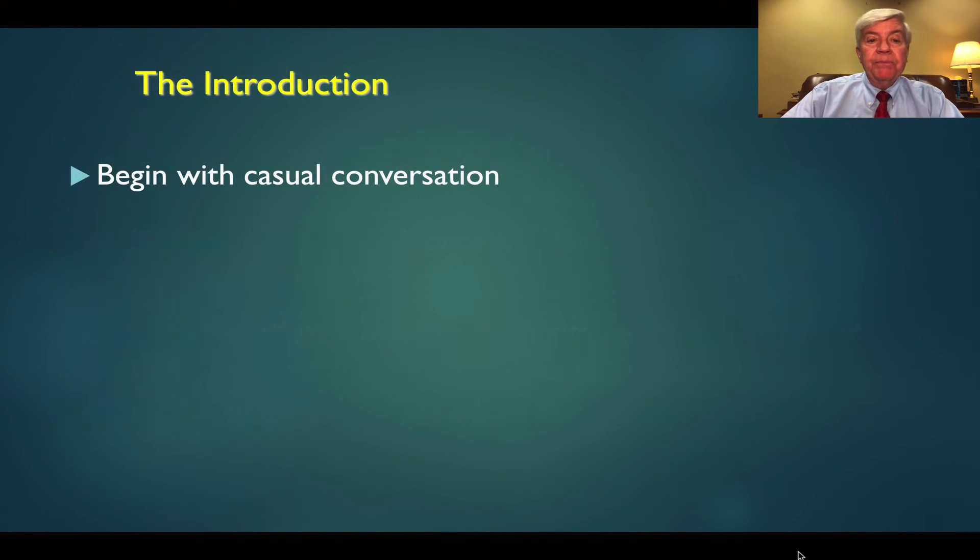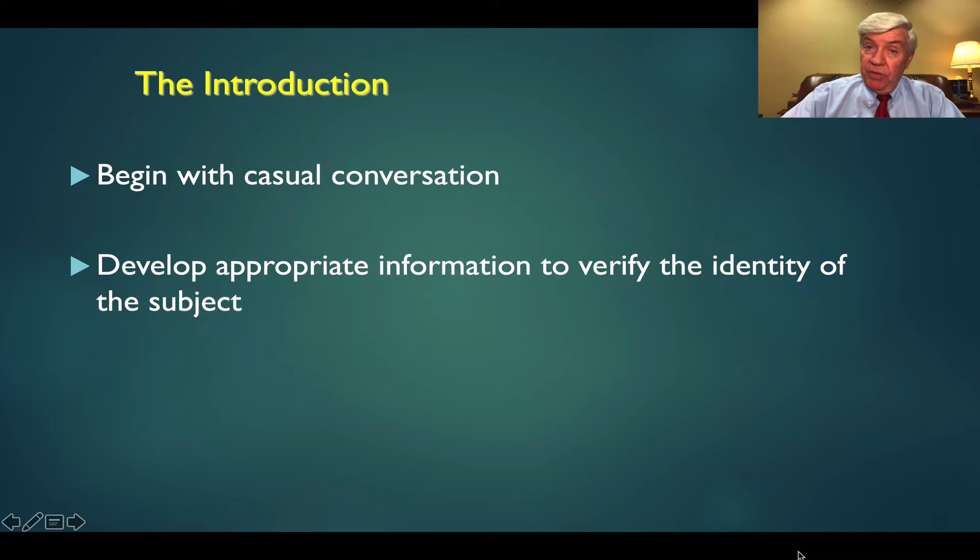We oftentimes begin the interview with casual conversation. This may involve biographical information about the subject themselves, something about their job, how long they've been working there, their current position, it may be some event that is in the news. The purpose of engaging in casual conversation at the outset of the interview is to acclimate the subject to the interview environment and to give us an opportunity to establish a behavioral baseline or norm. Everybody is unique, everybody has their own mannerisms, the way they speak, their vocabulary, how they look at another person. So we want to establish a baseline for this subject so that later on when we get to the issue under investigation and we see a dramatic change from that norm, that change could be a significant indication and a red flag that we want to pursue that area of inquiry in more detail.